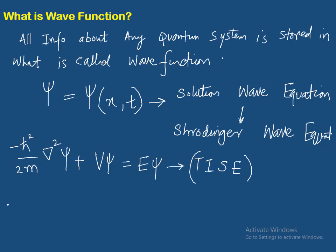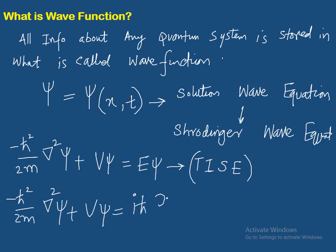What is the time-dependent Schrödinger equation? It is: minus H-bar squared over 2m, del-squared psi, plus V times psi, is equal to i times H-bar times partial psi by partial t. Remember that H-bar means H divided by two pi — two pi ko absorb kar diya hai H ke andar, by H-cross.